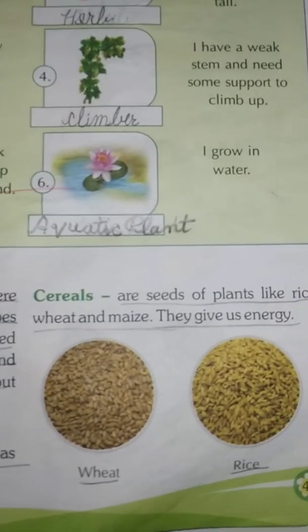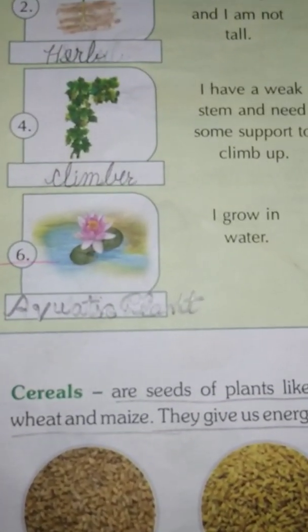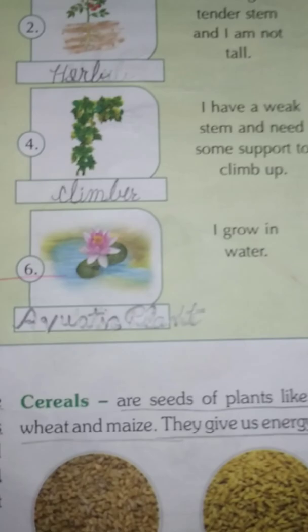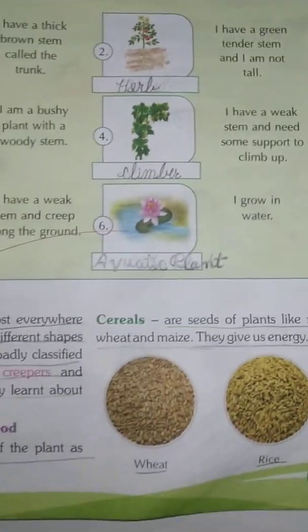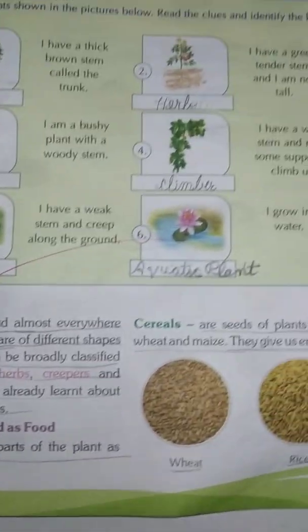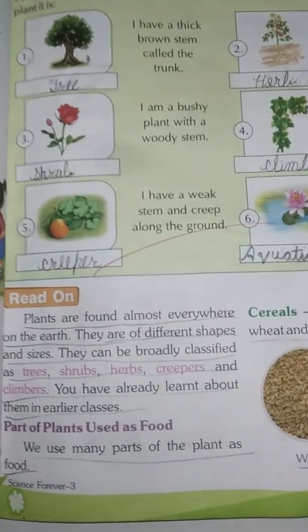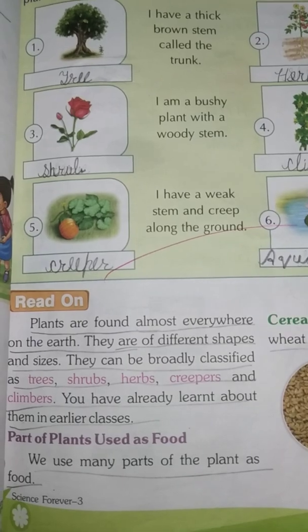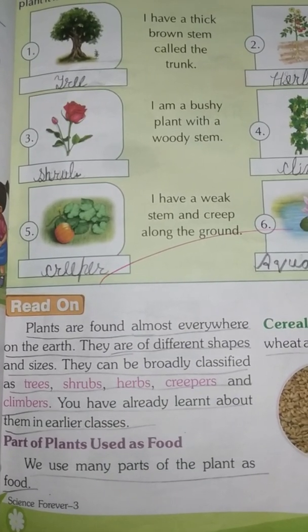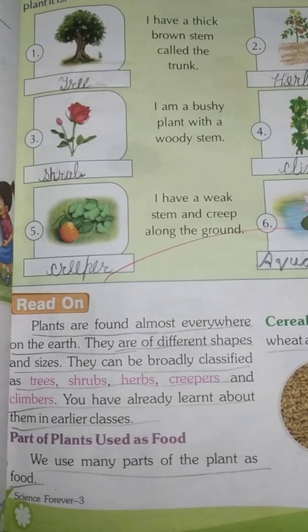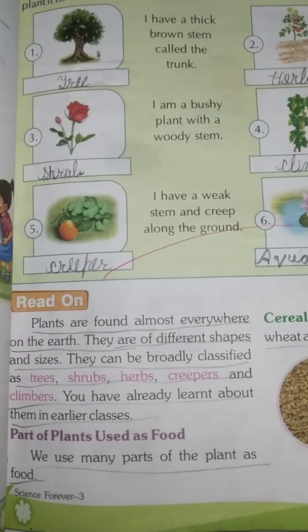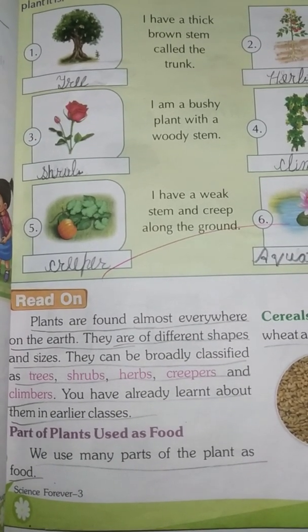Number 6: I grow in water. The answer is: Aquatic plant. Okay students, you have seen that plants are found almost everywhere on the earth. They are of different shapes and sizes. They can be broadly classified as trees, shrubs, herbs, creepers, and climbers.